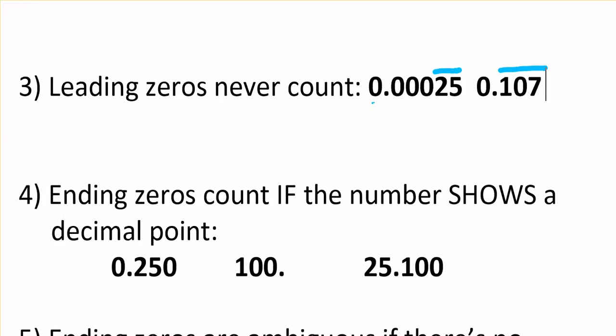Ending zeros count if the number shows a decimal point. If you see the dot, you have to actually see the dot. There it is. Then ending zeros count. So these three count. Leading zeros never count. This ending zero counts. This looks kind of funny - 100 dot. Well, that dot makes these digits significant, so it's important. And of course, all of these are significant.